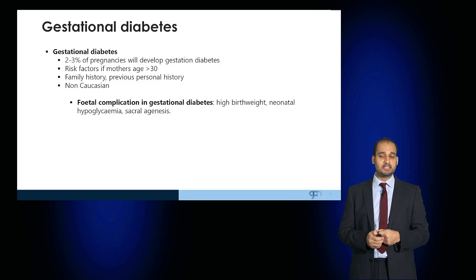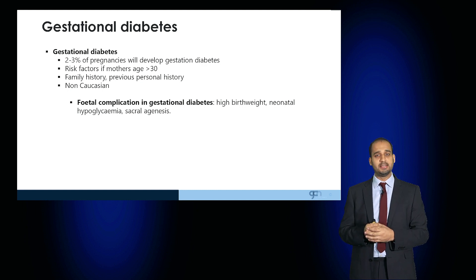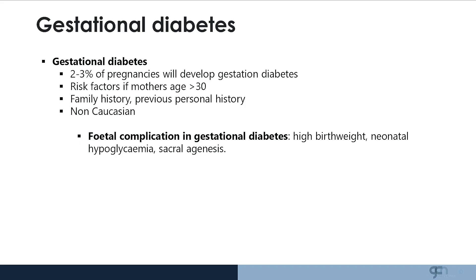Another important form of diabetes is gestational diabetes. 2% to 3% of pregnancies will result in the patient developing diabetes. Risk factors include mothers who are over 30 years old, those with a family or previous personal history, and being non-Caucasian. The complication is that excess glucose circulating in the mother will be transmitted to the fetus, resulting in high birth weight and neonatal hypoglycemia as the fetus increases its secretion of insulin.